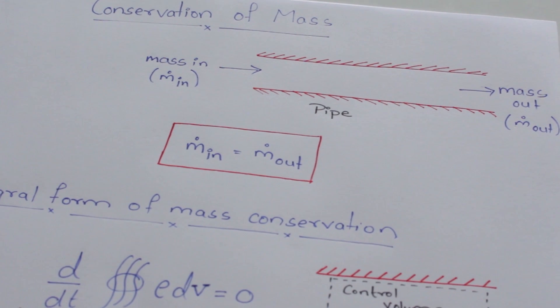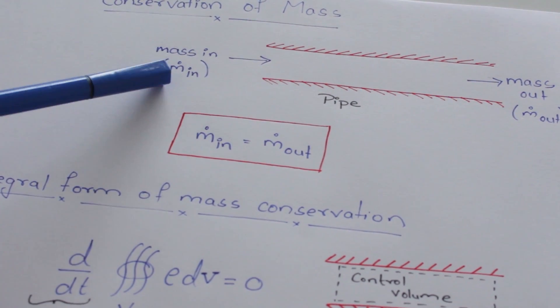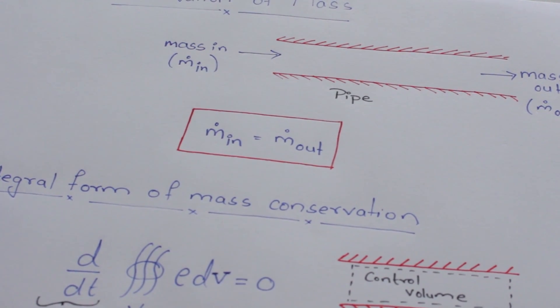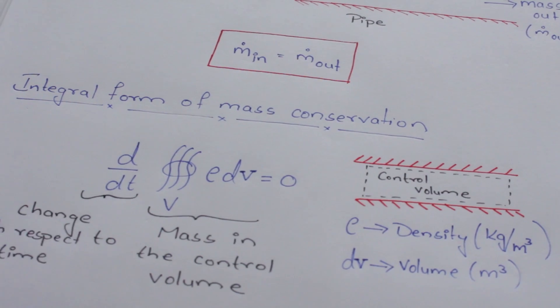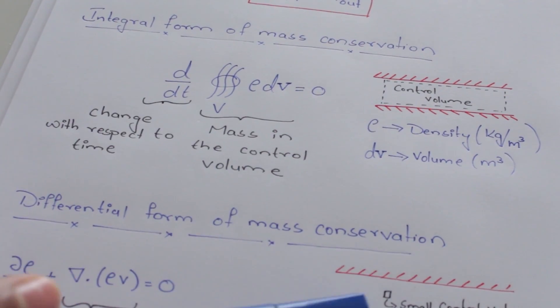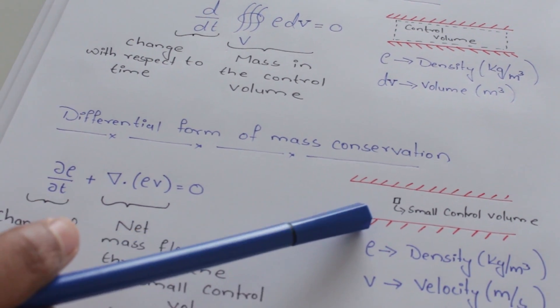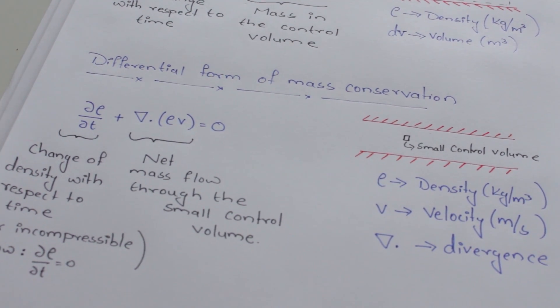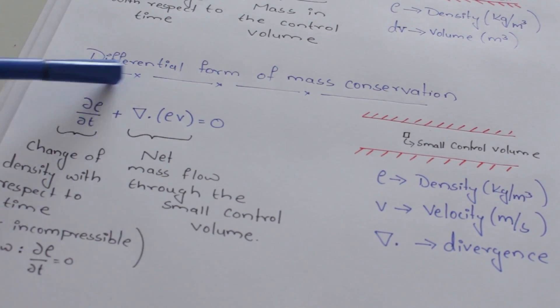The conservation of mass is something that you're already familiar with. Mass can neither be created nor destroyed. To help understand this, let's take an example of water flowing through a pipe. The conservation of mass says that whatever mass of fluid goes in has to come out. Mathematically, this can be expressed in an integral form in this equation. Now imagine, if you shrink the domain that you are interested in to an infinitesimal small control volume, mass conservation has to still hold. But now, the equation changes to a differential form.